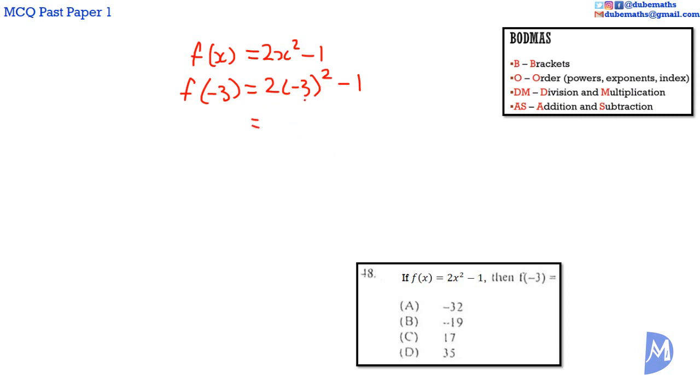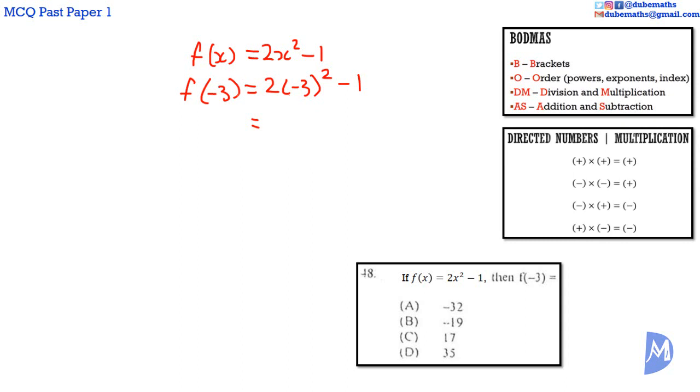Negative 3 squared is equal to negative 3 multiplied by negative 3. 3 multiplied by 3 is equal to 9, and negative by negative is a positive, so positive 9. So we have 2 multiplied by positive 9 subtract 1. 2 by 9 is equal to 18. 18 subtract 1 is equal to 17. The answer is C.